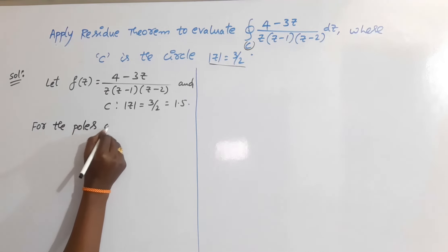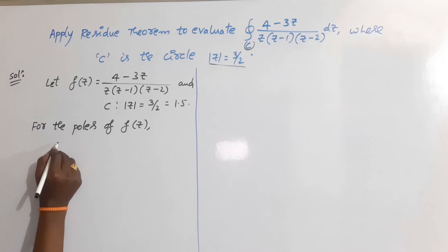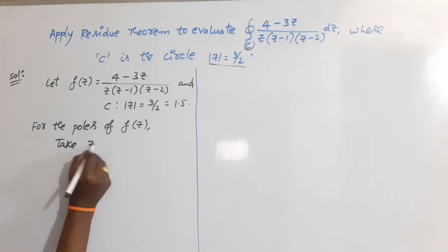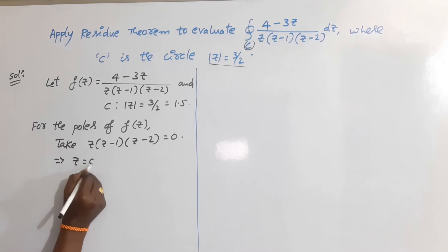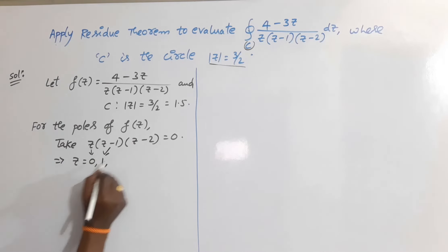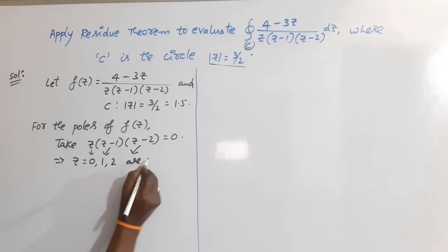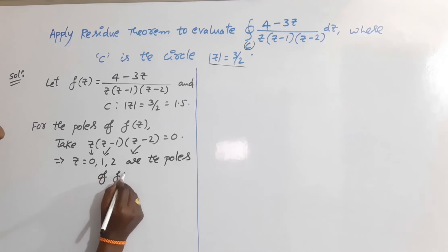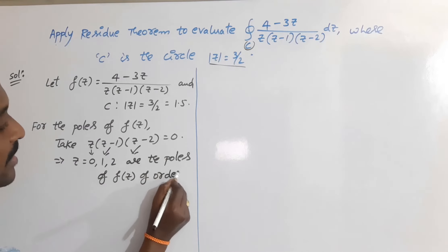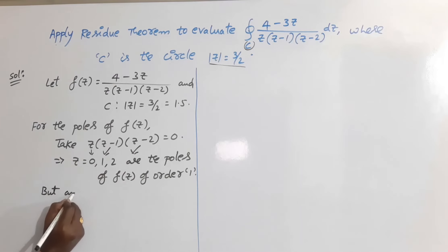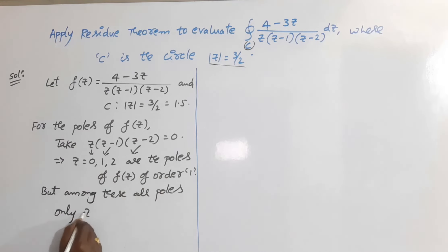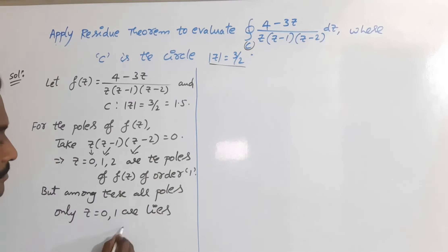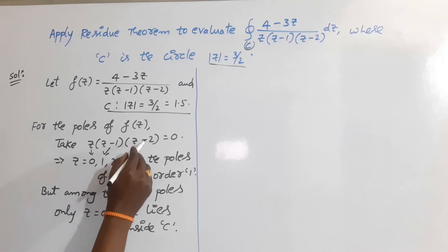First we find the poles of f(z) by equating the denominator to zero. Setting the denominator equal to zero gives z = 0 from the first factor, z = 1 from the second factor, and z = 2 from the third factor — so 0, 1, and 2 are all simple poles of order 1. However, among these, only z = 0 and z = 1 lie inside C, because the radius of the given circle is 1.5 and therefore z = 2 lies outside C.